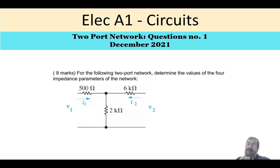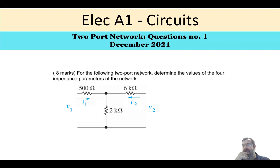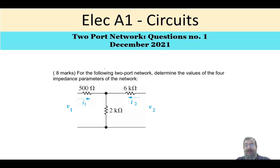This is about a two-port network. It's a very simple question, very easy to understand. Just in case you see something like this in the future, you know how to deal with it. The question says: for the following two-port network, determine the values of the four impedance parameters of the network.